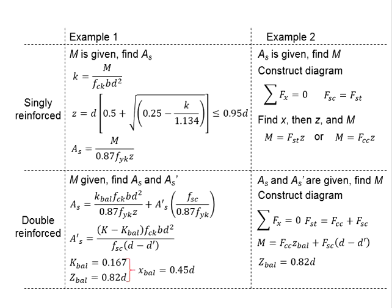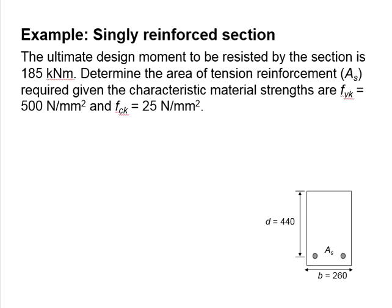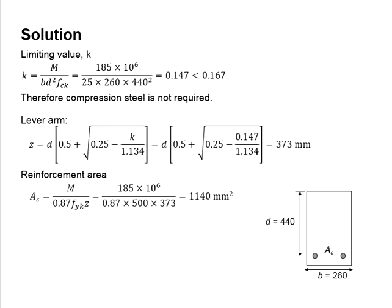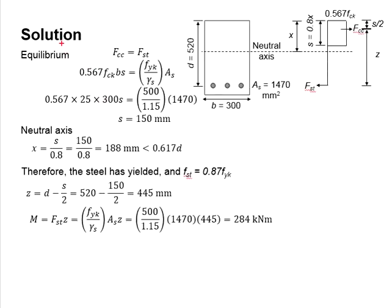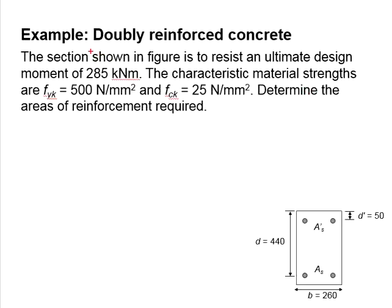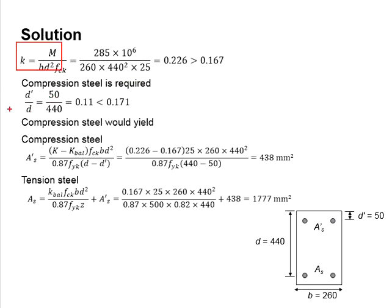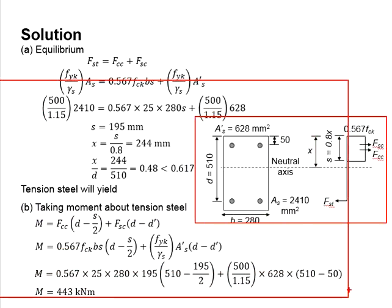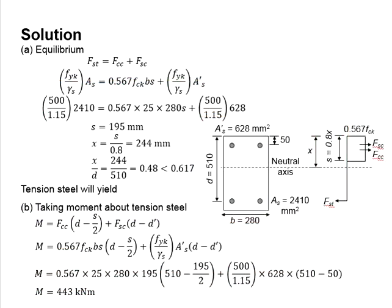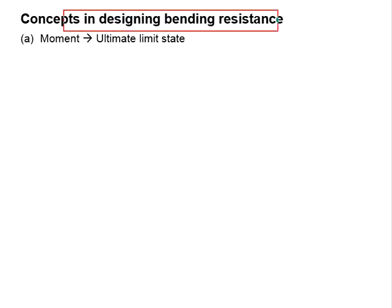Let us talk about the design for the bending resistance of a beam. From the previous videos, you may have noticed that sometimes a series of equations are used in solving the questions, while other times the solutions are worked on the basis of the stress block diagram. A similar pattern is observed for doubly reinforced concrete. The question is: when should you use the equations, and when should you use the stress block diagram? To answer this, you need to understand the concepts in designing for bending resistance.